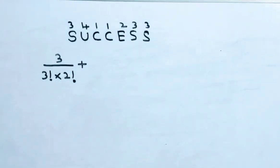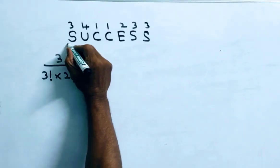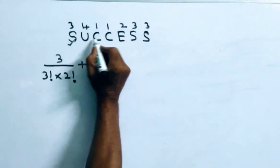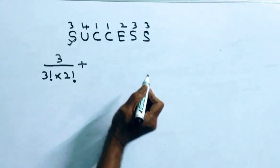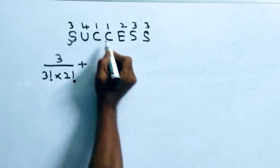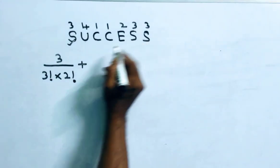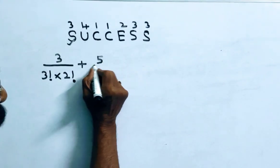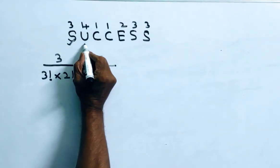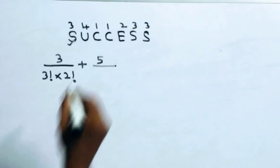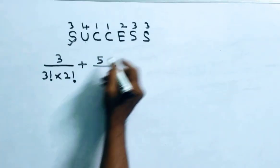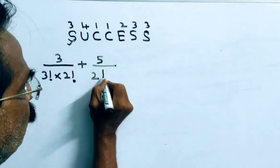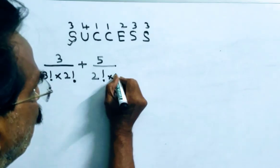Yes, next coming to U. How many letters are there to the right of U whose rank is less than 4? 5 letters are there, friends. So 5 over. Including U, how many letters are repeated? 2 C's are repeated, 2 S's are repeated. So, 2 factorial into 2 factorial.